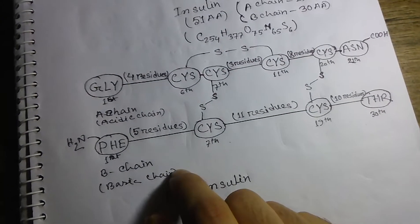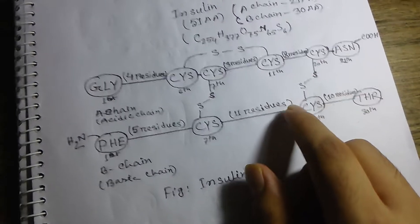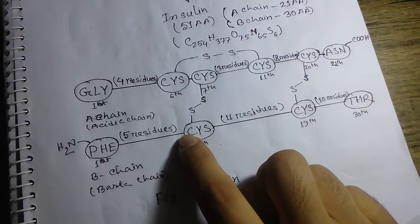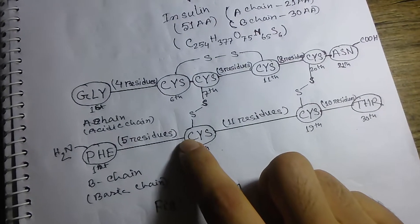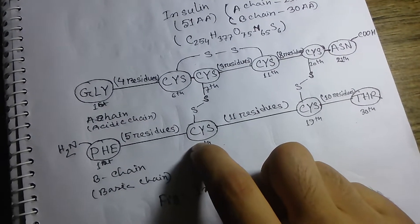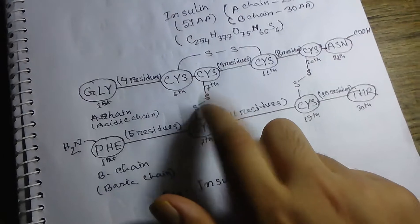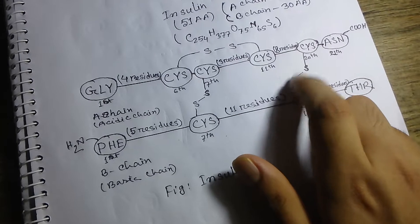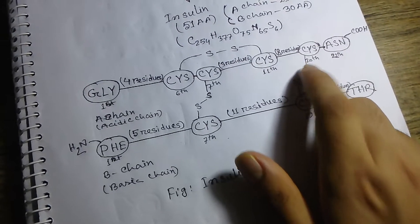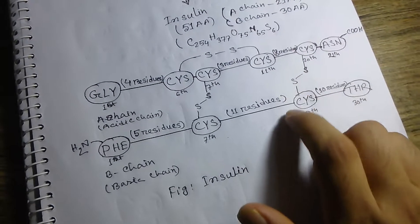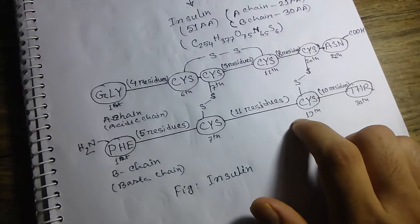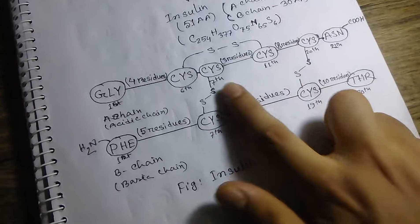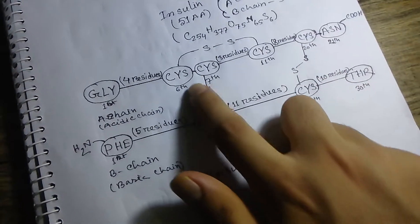Both A chain and B chain are connected by disulfide bridges at the 7 position of both chains. The first disulfide bridge is formed at position 7, and the second disulfide bridge is formed at the 20th position of A chain and 19th position of B chain.